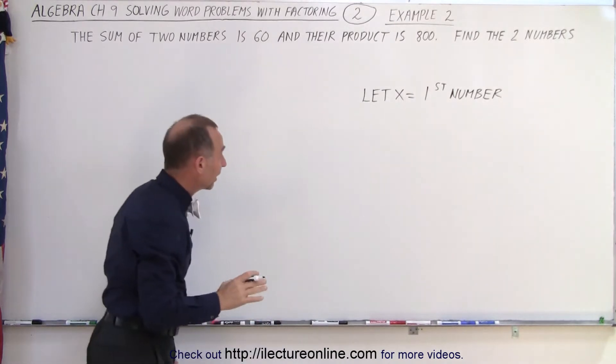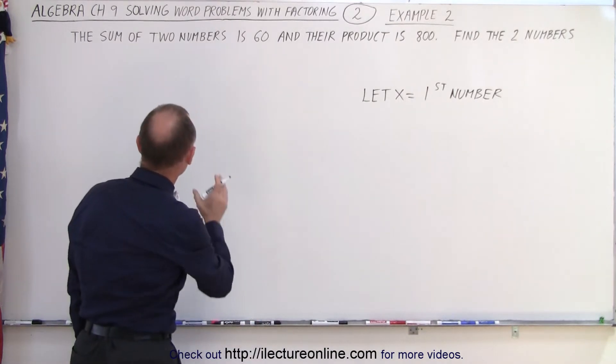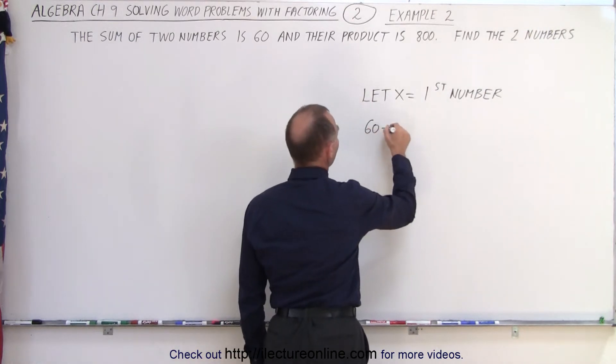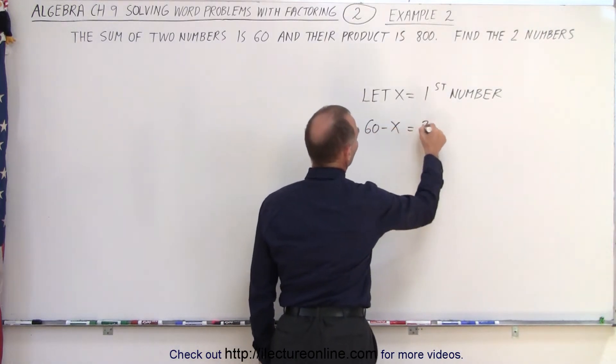Now, what should we call the next number? Well, if the sum of them is 60, then we can say that 60 minus x is equal to the second number.